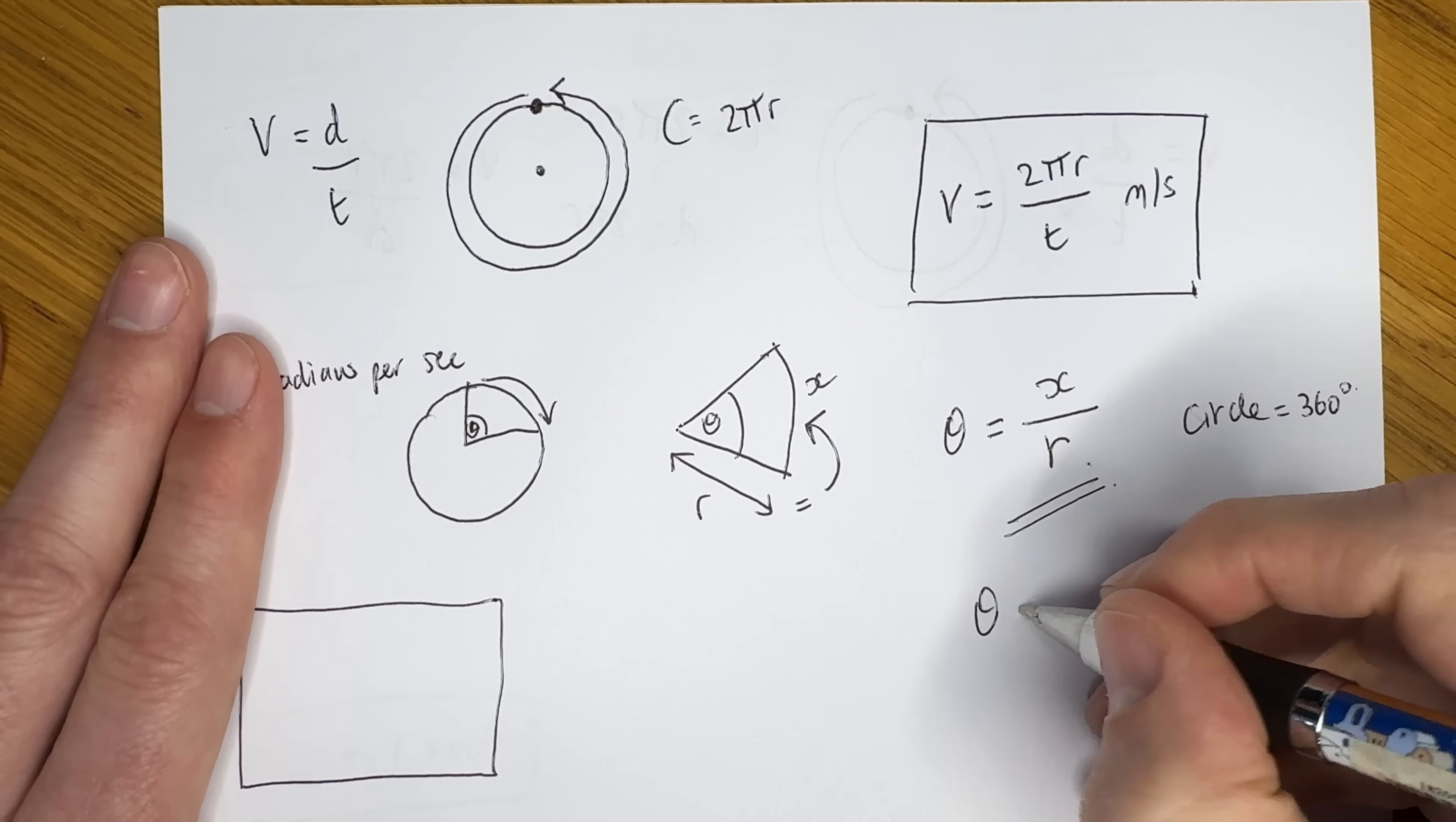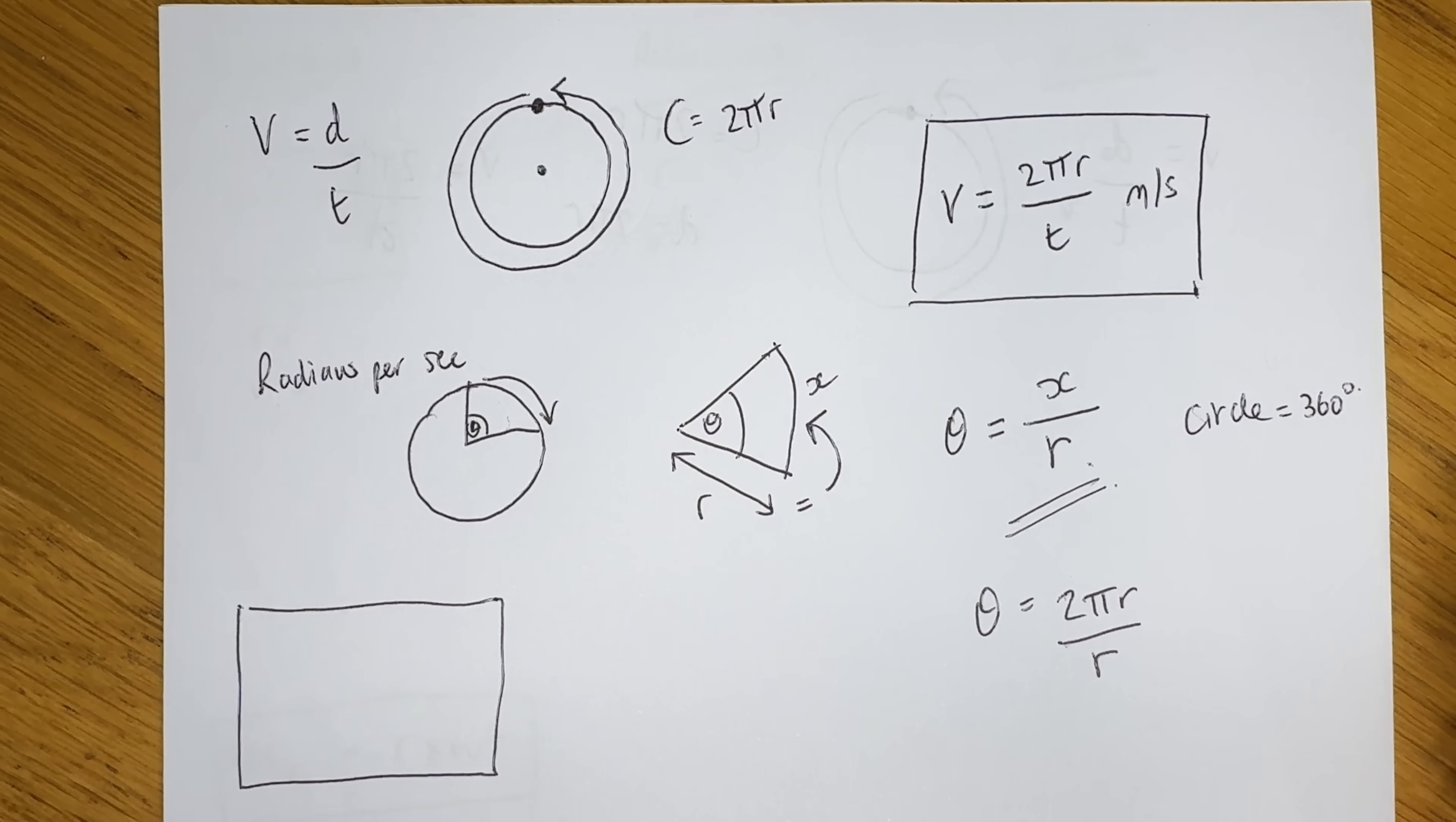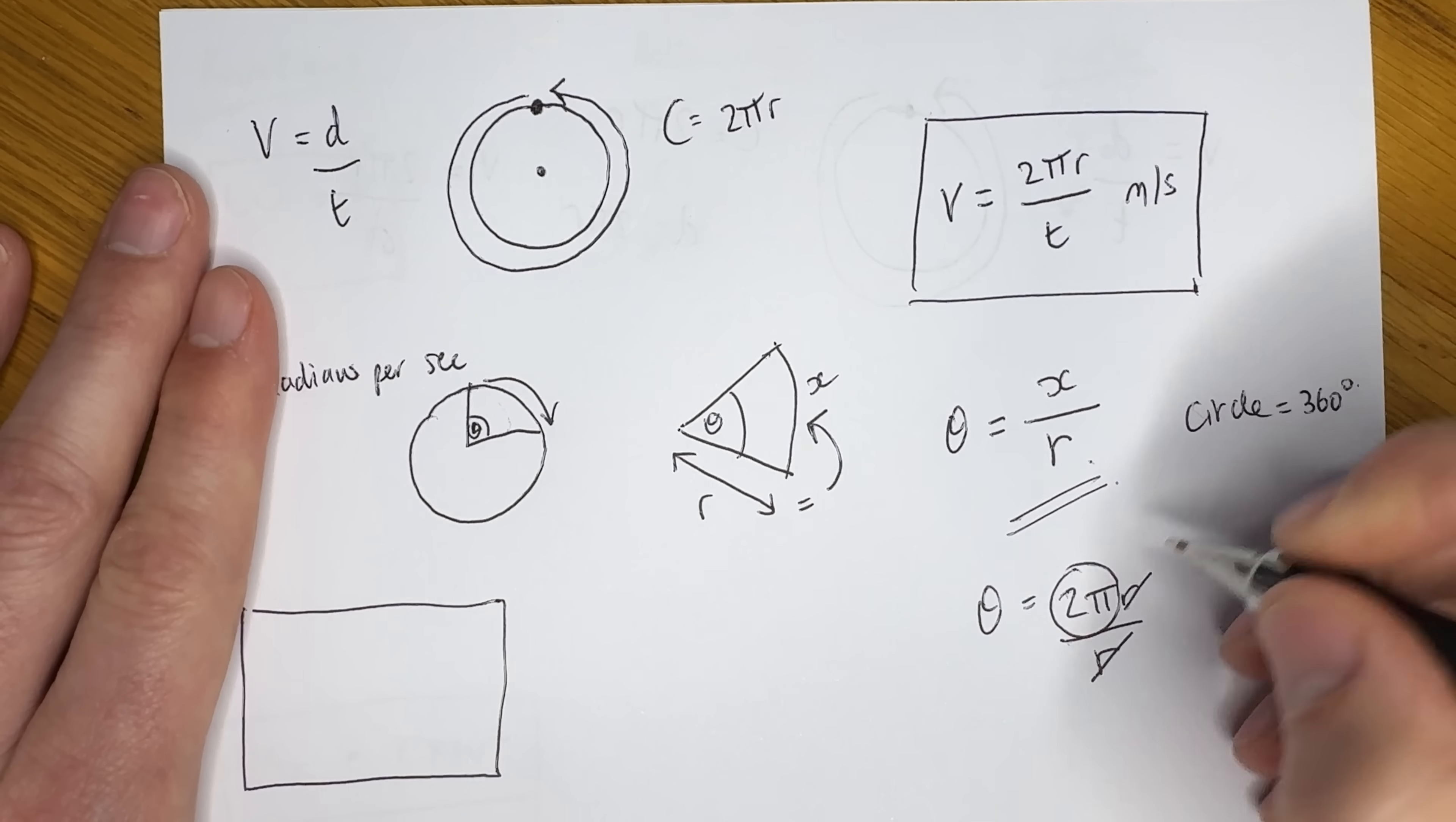we know that a full circle has 360 degrees. If we go back to our radian equation here, we know that the entire 360 degrees, if that was our arc, so to speak, we would then place 2πr at the top here, because the circumference of a circle is 2πr. And we divide by r to get our angle of the entire circle in radians. So with this little equation, the r's cancel out, and that leaves us 2π. So we can say that there are 2π radians in an entire circle.